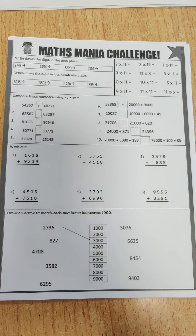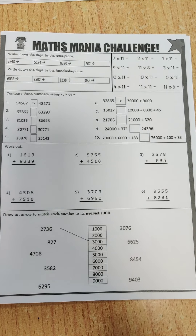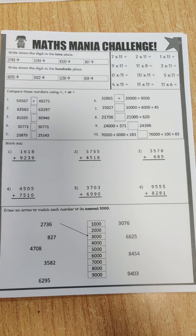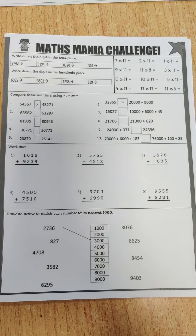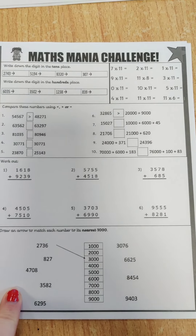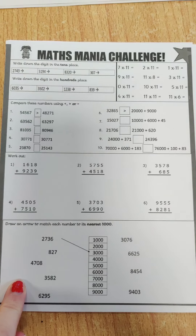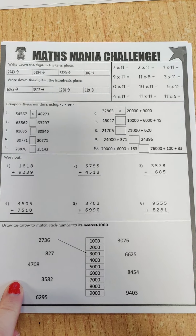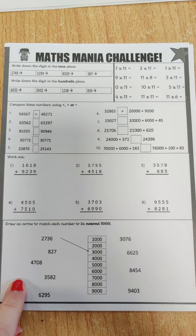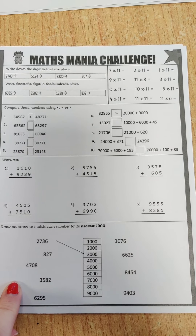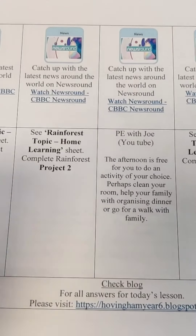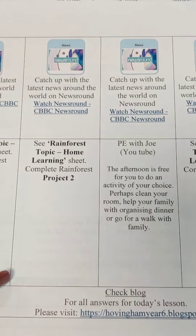As part of your maths this week, you've also got your maths mania challenge. You've got five copies, which means you do one per day. Allocate yourself five minutes and try to improve each day.